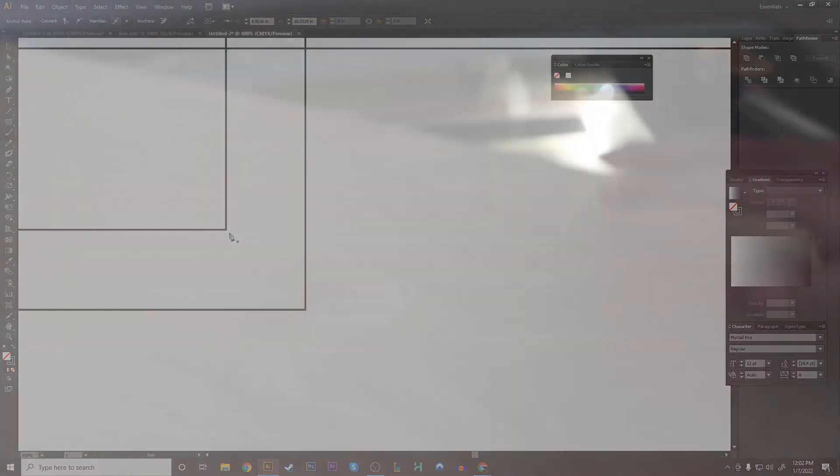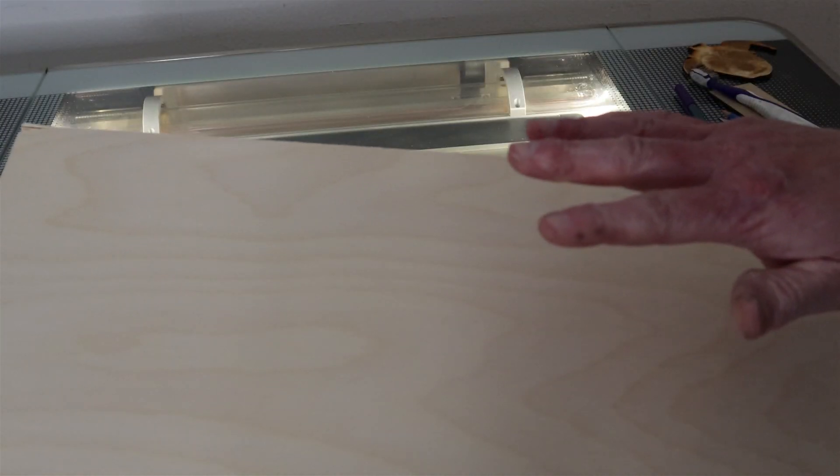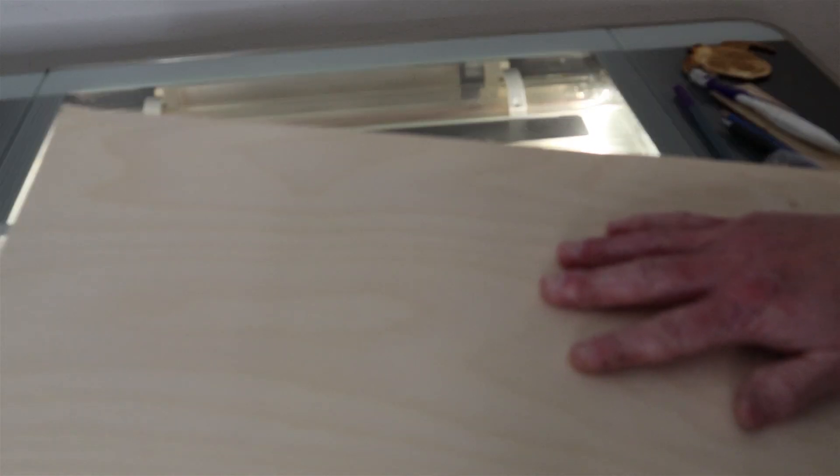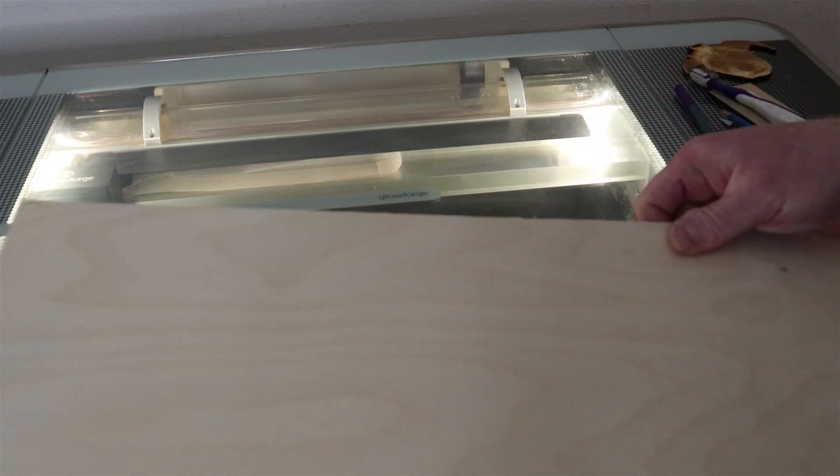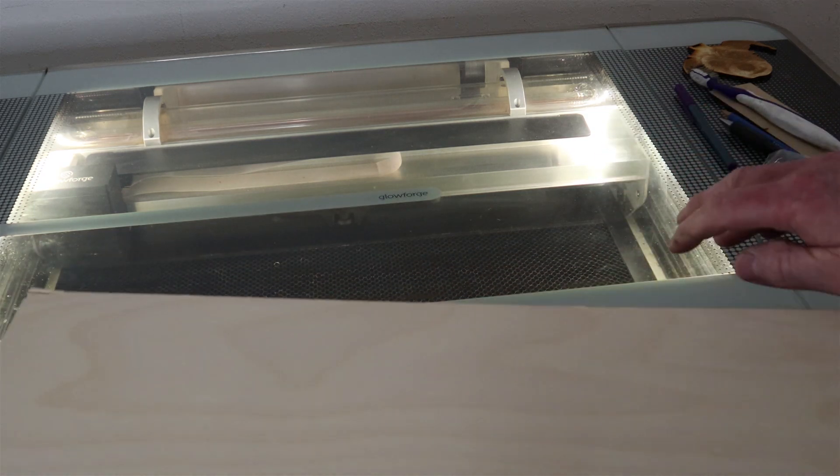I pre-sanded down these eighth inch pieces of plywood with a 220 grit sandpaper. I found that sometimes I get a little bit better cut, and because I'm going to be spray painting these after, I'm hoping that it'll give me a little bit nicer finish right after they cut. I'm going to put this in and start the cut.